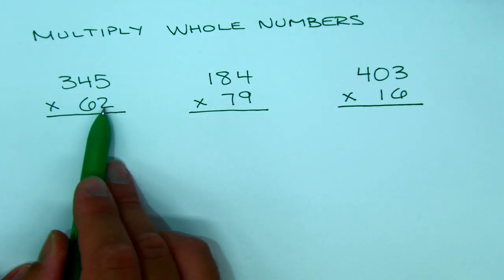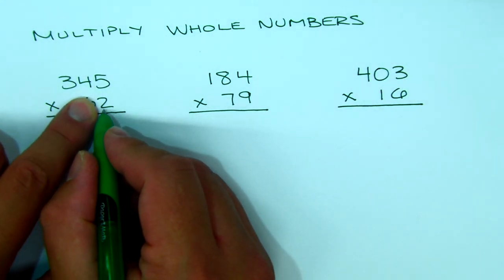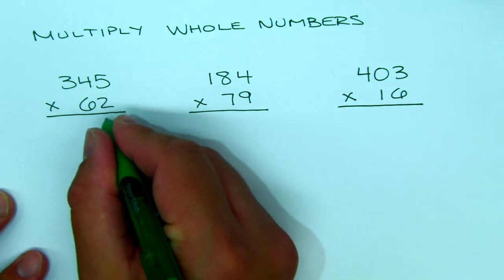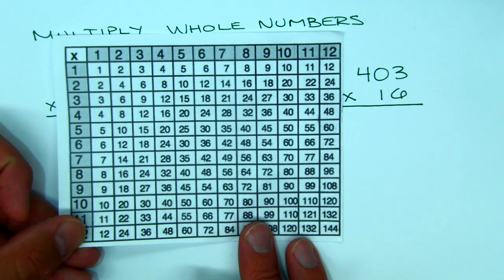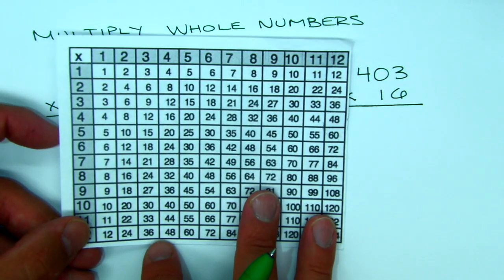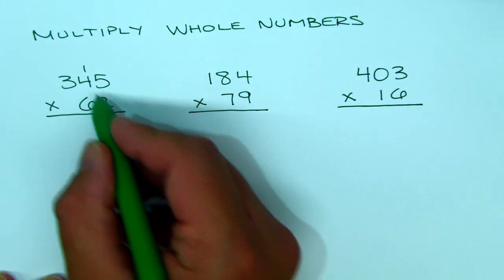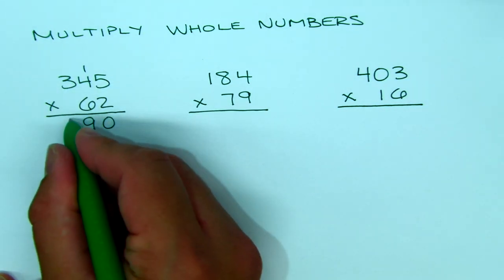We're going to focus on the 62 and break it apart into 60 and 2, starting with that 2 — kind of ignoring the 6 and just treating it as 345 times 2. So 2 times 5 is 10: 0 goes down, 1 goes up. 2 times 4 is 8, plus 1 is 9. Then 2 times 3 is 6.